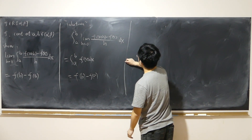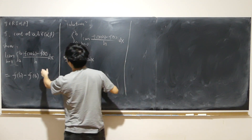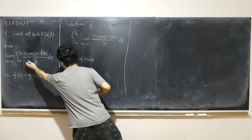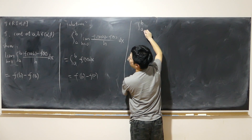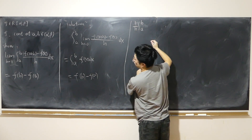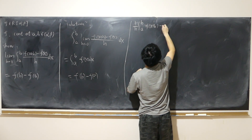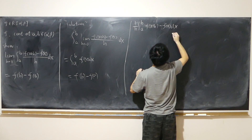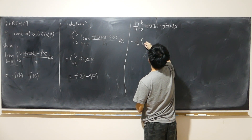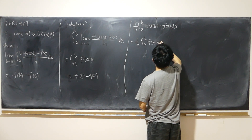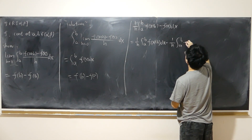Here is the correct solution. Because f is Riemann integrable, the integral is meaningful. Let's do some substitution. Take out the 1/h, since h is fixed for now, and let h approach zero later. We split the integral: (1/h) times the integral from a to b of f(x+h) dx, minus (1/h) times the integral from a to b of f(x) dx.